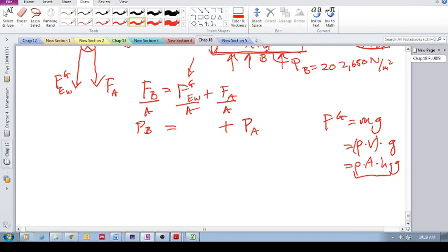So we put that in there. We've got density, area, height, times gravity over the area. We can see that this area cancels and we've got density which is for water 1,000 kilograms per meter cubed times height times 9.81.